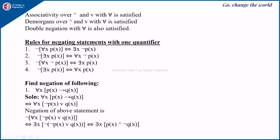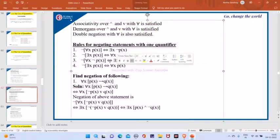Now let us see the rules for negating statements with one quantifier. The negation of 'for all x, p(x)' is logically equivalent to 'there exists x, ¬p(x)' — the quantifier changes from universal to existential, and negation is applied to p(x). The negation of 'there exists x, p(x)' is equivalent to 'for all x, ¬p(x)' — the existential quantifier becomes universal, and negation is applied to p(x). The negation of 'for all x, ¬p(x)' is 'there exists x, p(x)' since double negation cancels out.